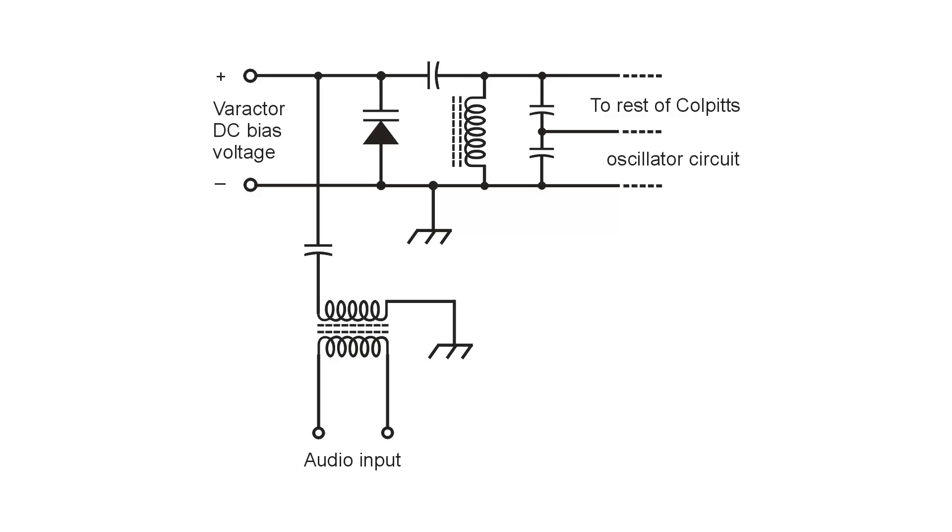I already described an amplitude modulator circuit in an earlier video and described the functions of the individual components in that circuit. Now let's look at a frequency modulator circuit and look at the components in that.